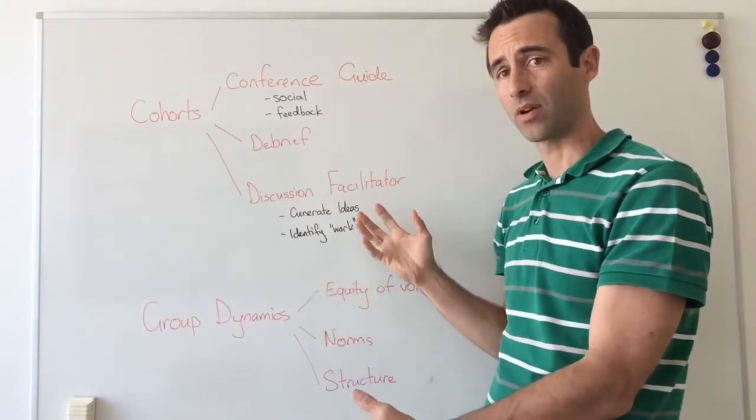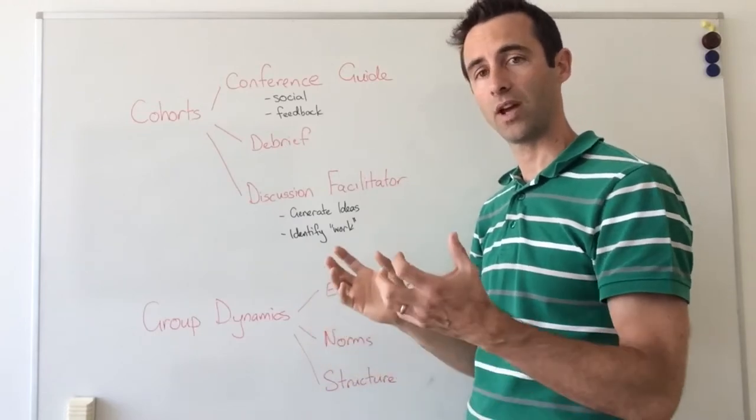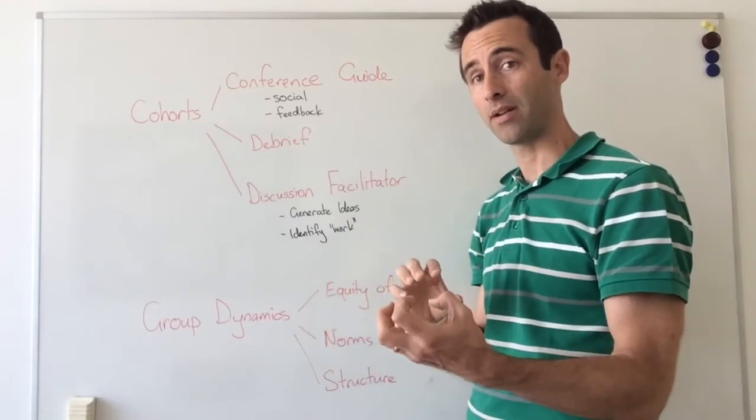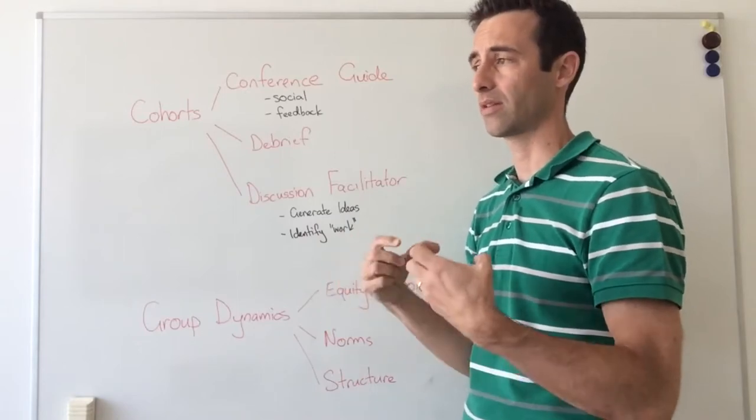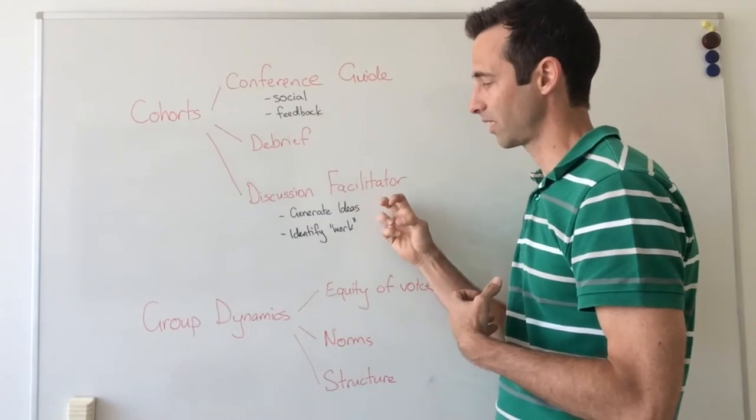The last role, and probably the trickiest role, is being that discussion facilitator. One of the powers of the cohort is you have people who are probably like-minded, especially in a similar role, who want to discuss their burning issues. So part of the role is being a facilitator for it.